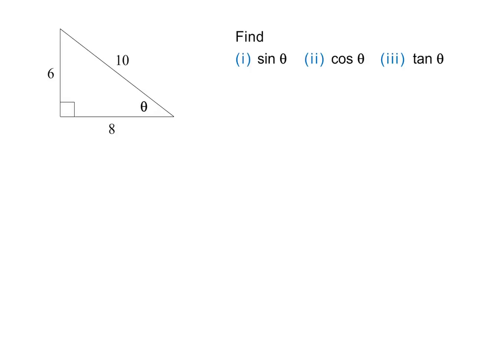Here is the first example. We are given a triangle and are asked to find sine theta, cos theta, and tan theta. Step one is to identify the sides of the triangle. The hypotenuse is easy because it is the side that lies opposite the right angle. The side next to theta is the adjacent side, and the side opposite theta is the opposite side. We need our three ratios — remember the order is sine, cos, tan, and then: oh heck, another hour of algebra. Sine theta is opposite over hypotenuse. From the triangle, we see that opposite is 6 and hypotenuse is 10, so the value of sine theta is 0.6. This completes part 1 of the question.